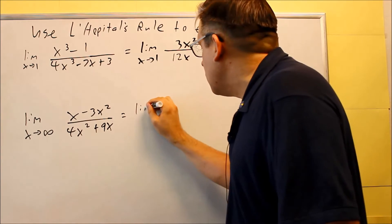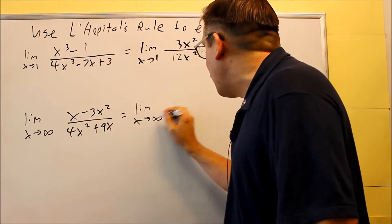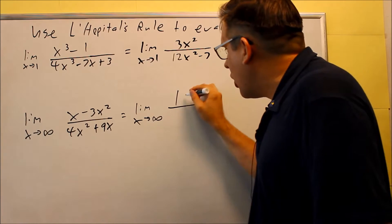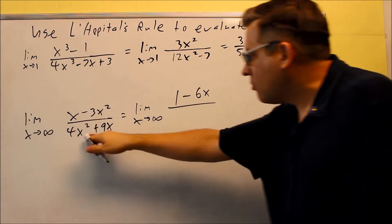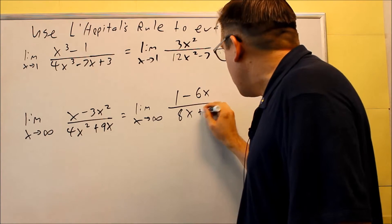So we're going to take the limit as x goes to infinity. We're going to do the derivative on top, you get 1 minus 6x. We're going to apply the derivative there on the bottom, 8x plus 9.